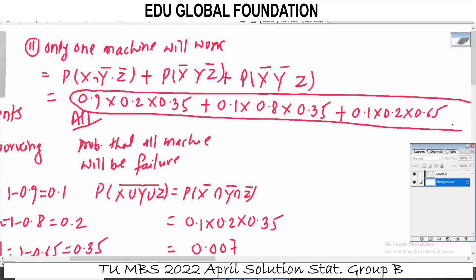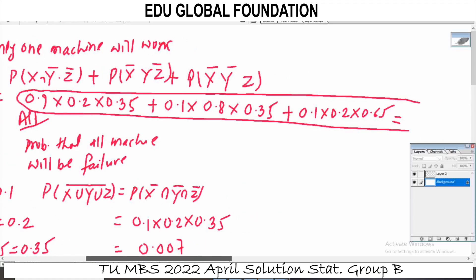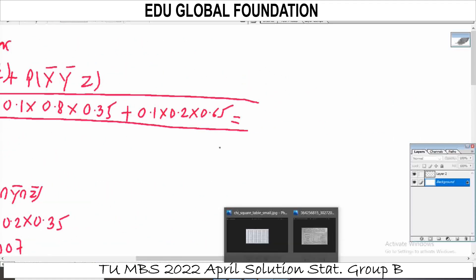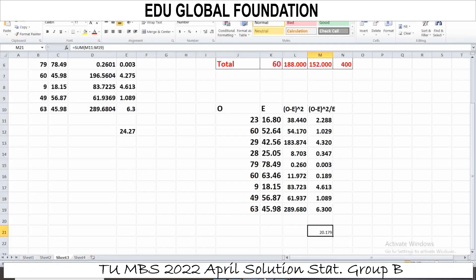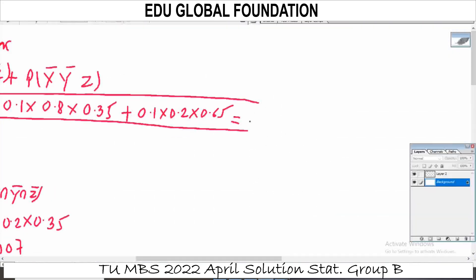For only one machine working without failure: P equals (0.9 × 0.2 × 0.35) + (0.1 × 0.8 × 0.35) + (0.1 × 0.2 × 0.65) = 0.104. So the probability that only one machine works without failure is approximately 0.143.